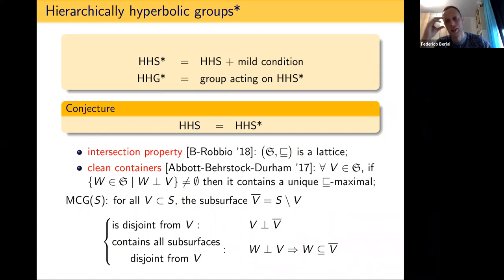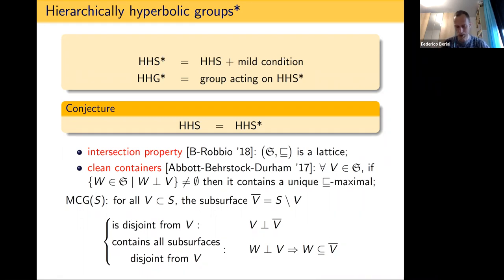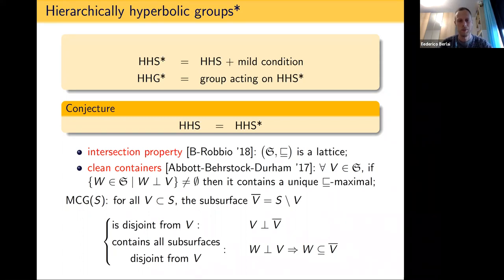Both of these conditions are very natural and known to hold in all examples of HHSs to date. We don't know if they follow from the definition or are additional requirements, but any operation that preserves the class of HHSs and HHGs also preserves these properties. In our paper with Bruno, to be safe it's stated as a question rather than a conjecture, though we expect it to be true at least for HHGs.